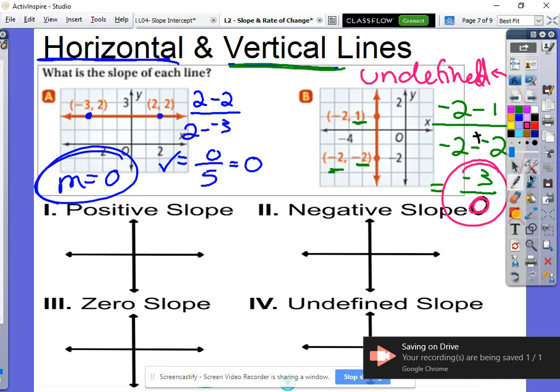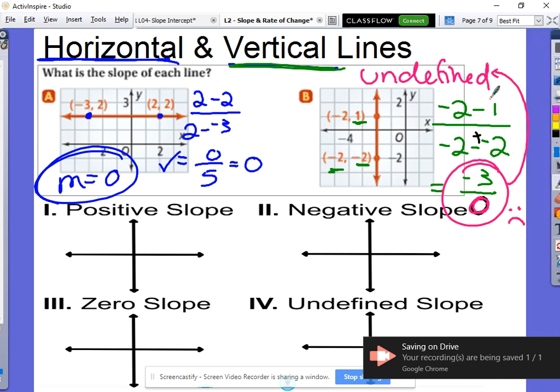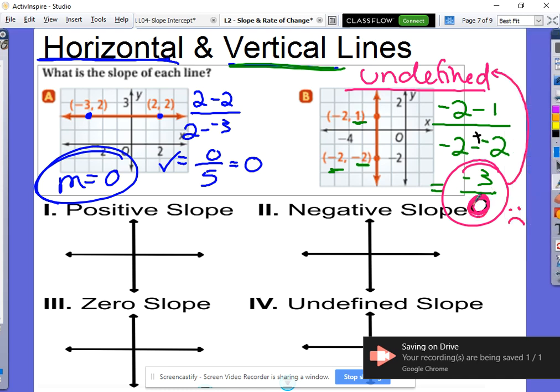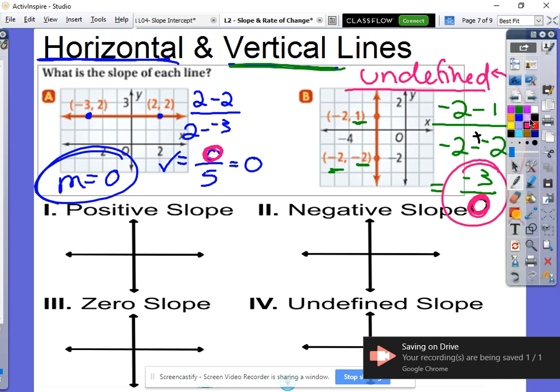So undefined slope is very, very important. It's only for a vertical line. If your line is vertical, your slope is going to be undefined. Really important that that's clear for you guys, and that only happens because you have a zero in the denominator. Zero in the numerator, no problem, that just means your slope is zero. But if your zero's in the denominator, you're in trouble. So that just means undefined.